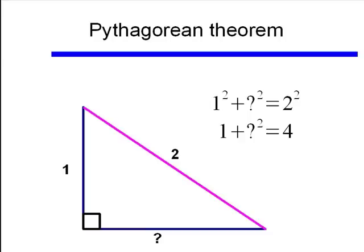And if we go ahead and do the exponents and then subtract 1 from both sides, we find the length of that leg squared equals 3. Or, that length of that leg is the square root of 3.